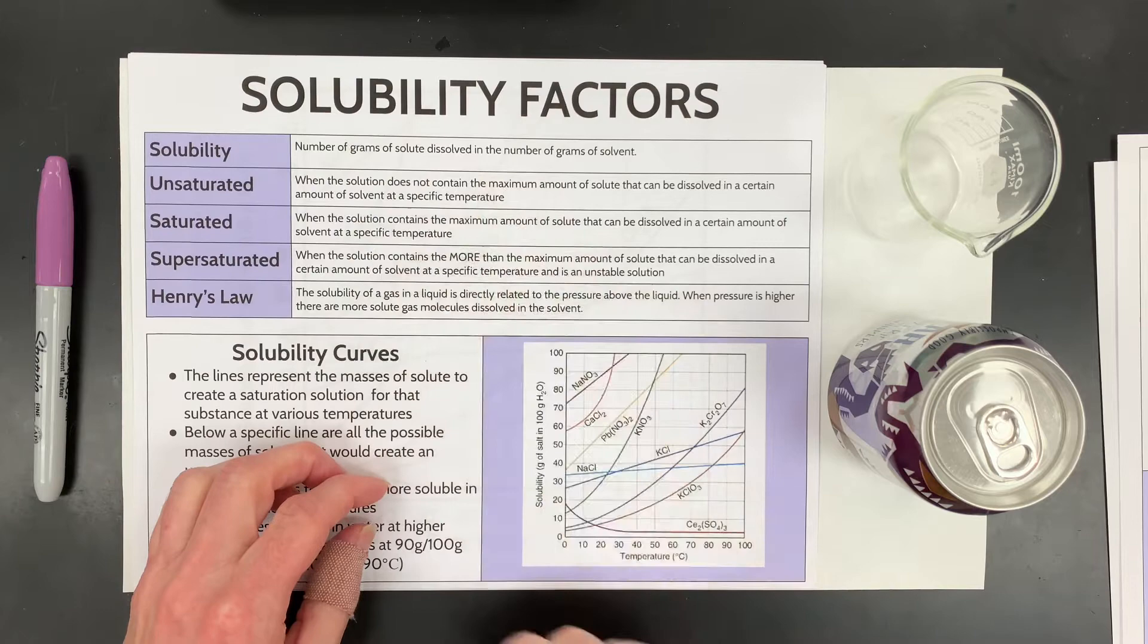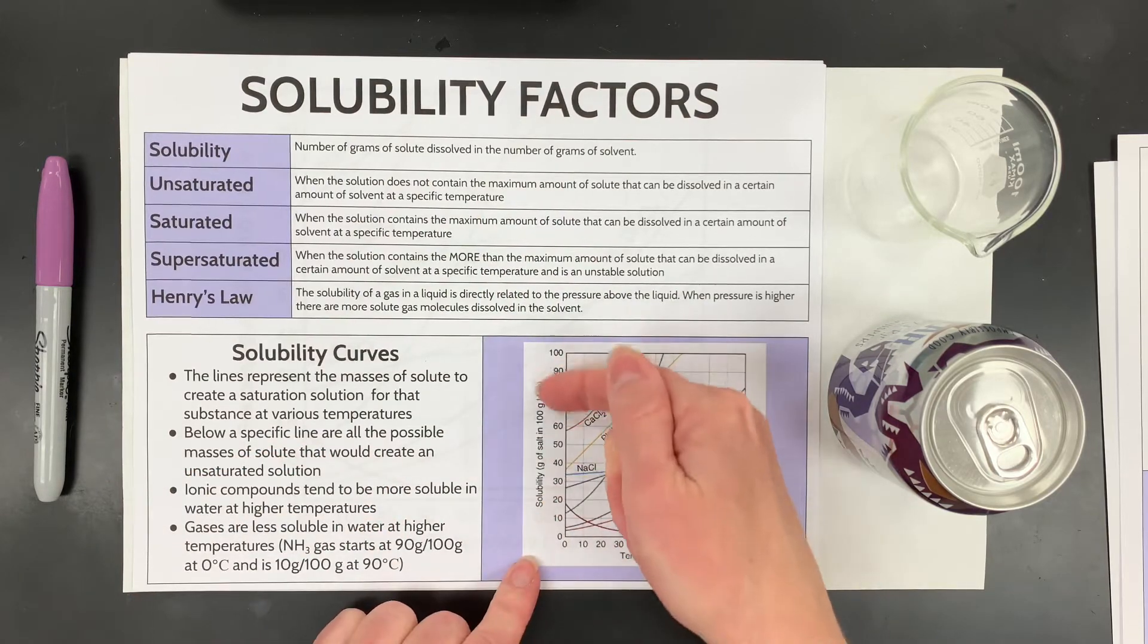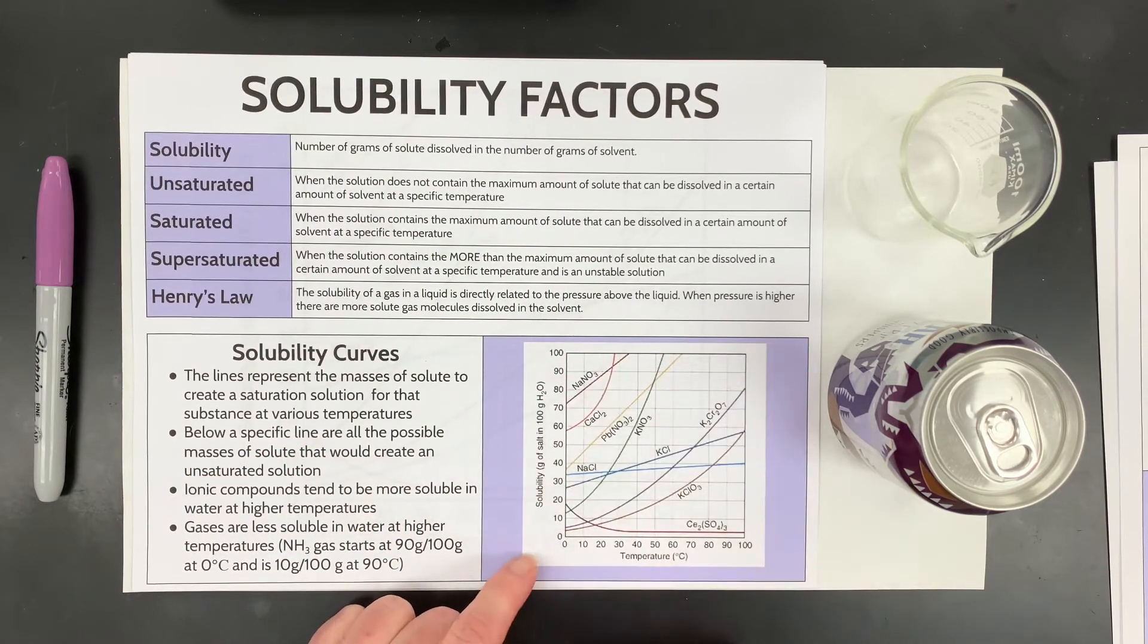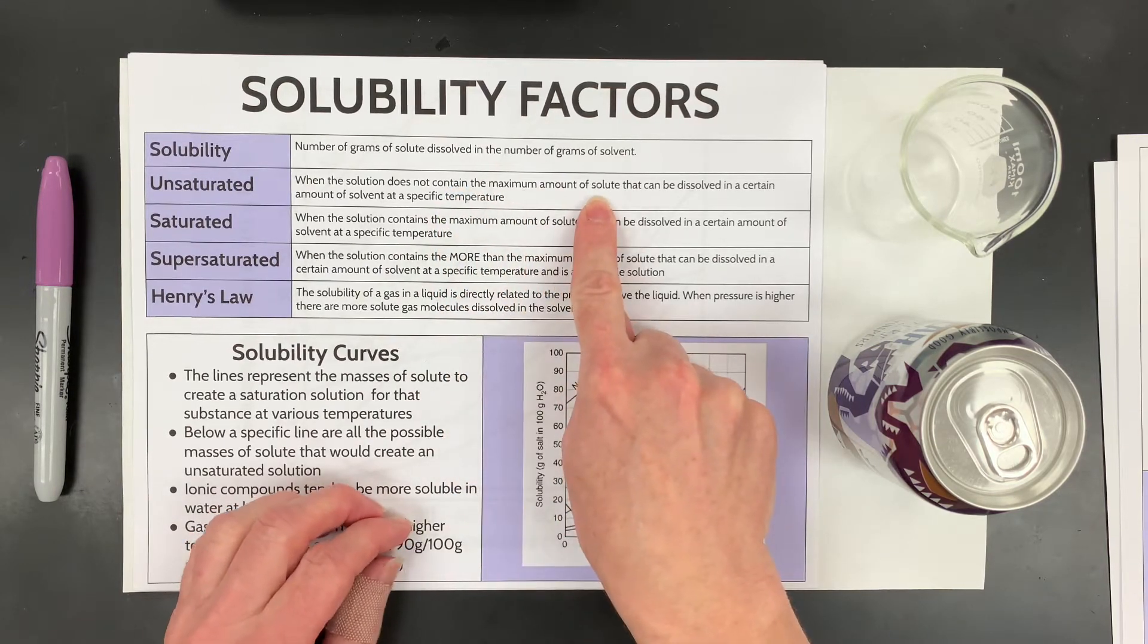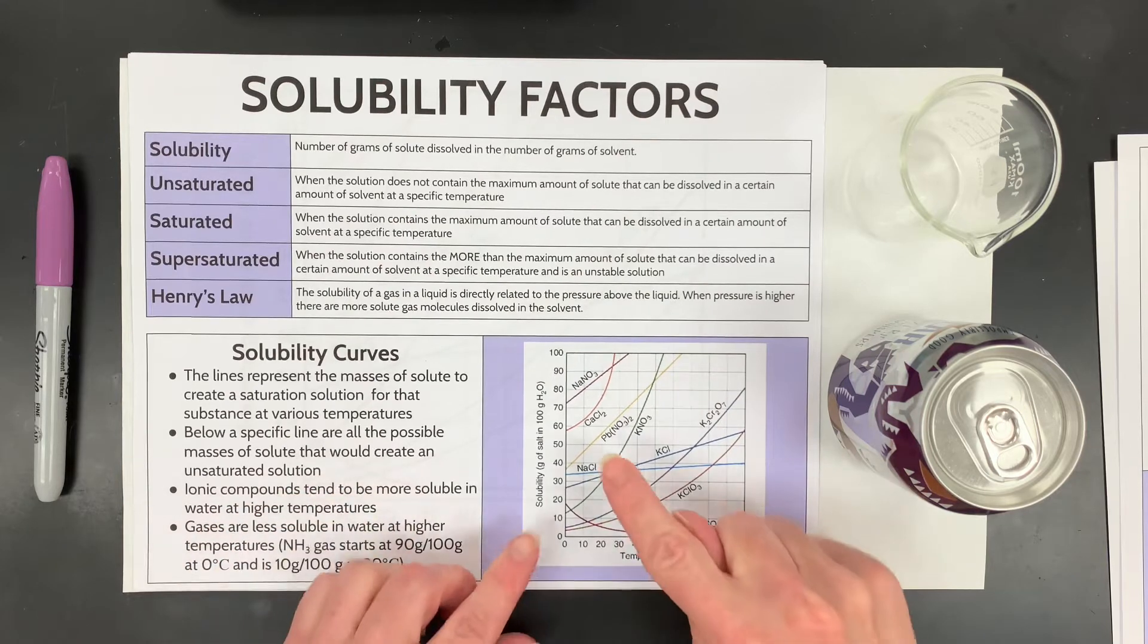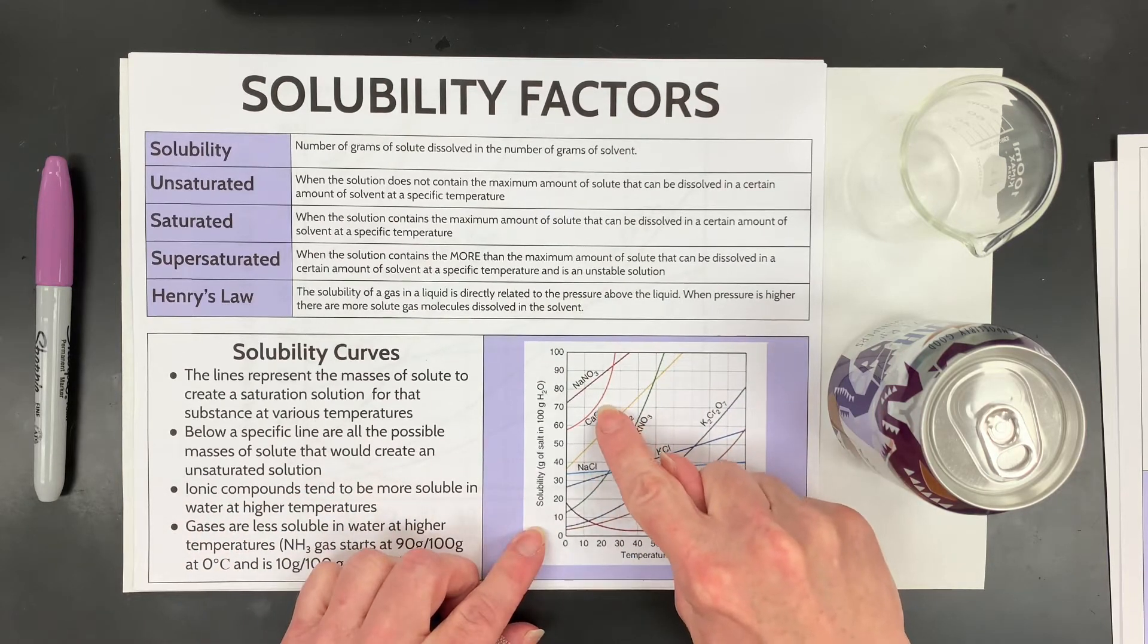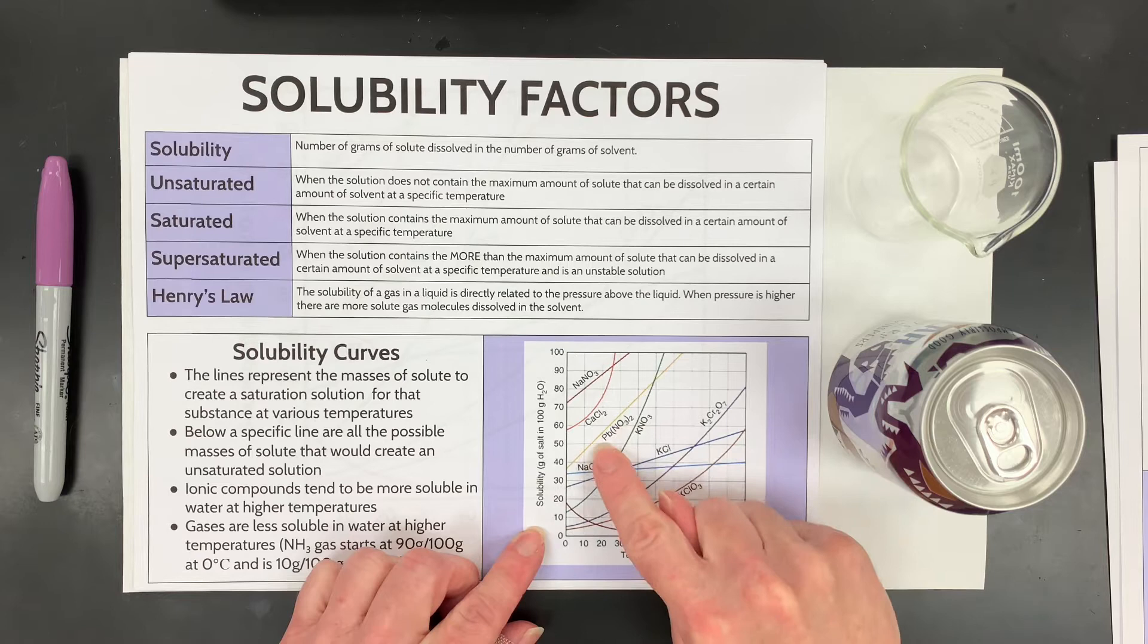All right, so solubility is the number of grams of solute dissolved in the number of grams of solvent. On a solubility curve it's this axis right here. An unsaturated solution is where we don't have the maximum amount of solute that we could have dissolved with that solvent, and that's going to be anything underneath the line.